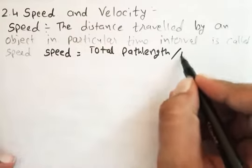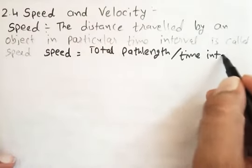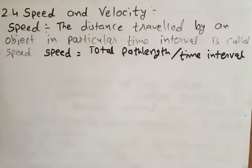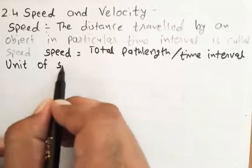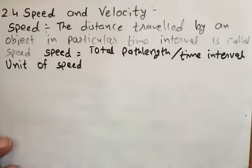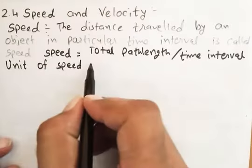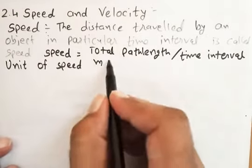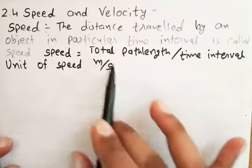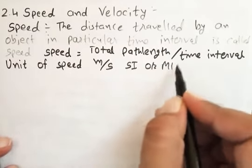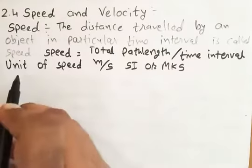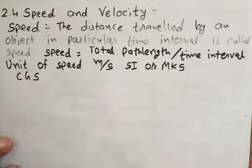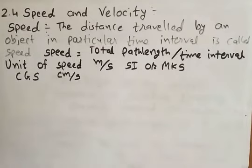Now we are talking about the unit of speed. Speed involves a length unit — that is meters — and a time interval unit — that is seconds. So in the SI or MKS unit system, speed is in meters per second. In CGS, the unit of speed is centimeters per second.